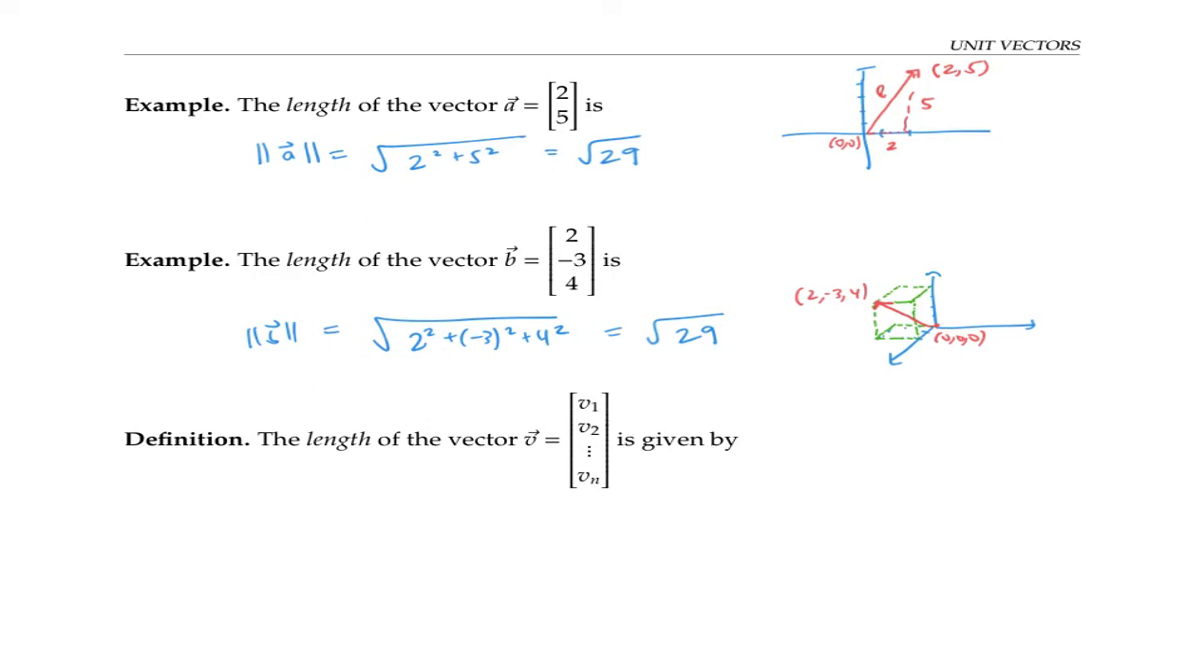And by the distance formula, that's the square root of (2 - 0)² plus (-3 - 0)² plus (4 - 0)², exactly the same formula as we used here.